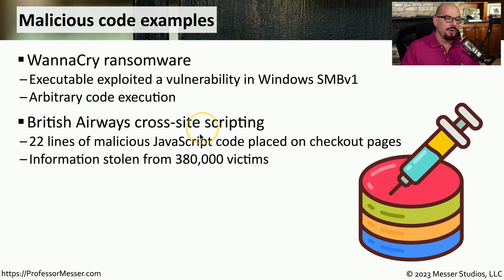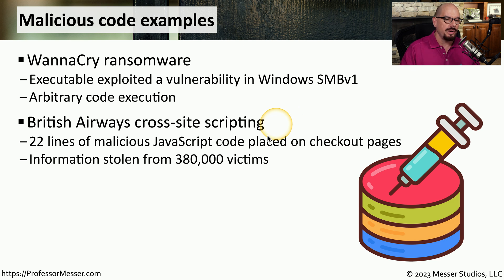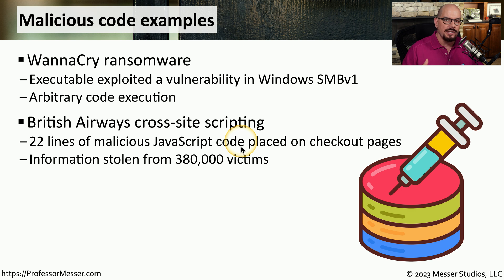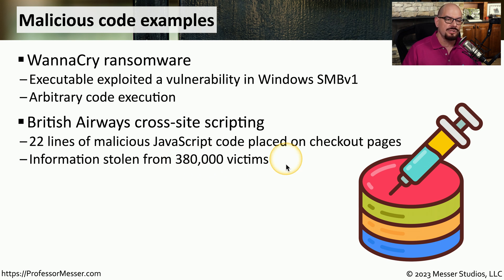Another type of malicious code was the one that affected British Airways with cross-site scripting. The attackers were able to gain access to the British Airways website, and they placed 22 lines of malicious JavaScript code on the pages used to check out when purchasing a flight. This allowed the attackers to start collecting credit card information, and by the time this was discovered, approximately 380,000 victims potentially could have had their credit card stolen in this cross-site scripting attack.